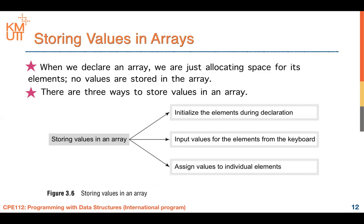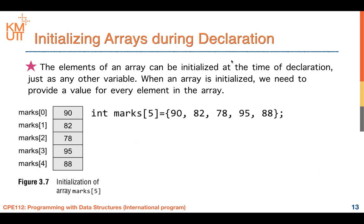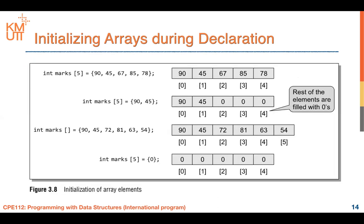When you declare an array, you just allocate space — sometimes no value is stored yet. There are three ways to initialize values in an array. The first is to initialize during declaration. For example, defining marks as five integers: int marks[5] = {90, 45, ...}. If you initialize all five slots, every slot is filled. This is the way you declare and initialize an array.